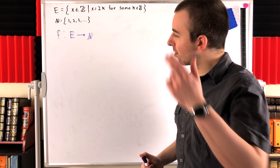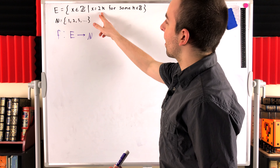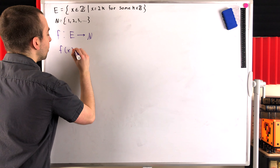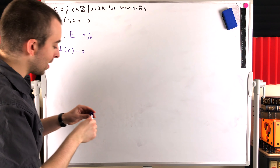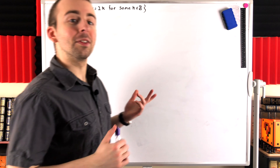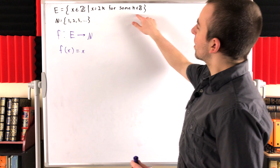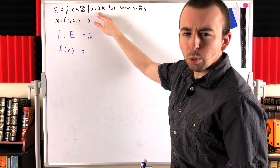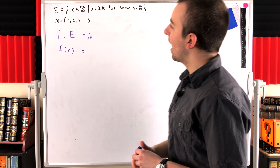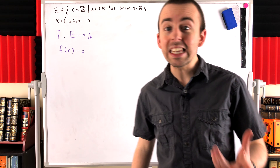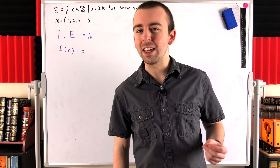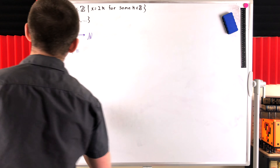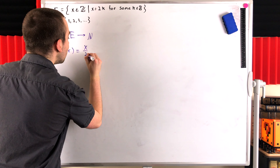So how could we come up with such a function? A quick look at our domain, the even numbers, tells us that certainly the identity function isn't going to work. We can't define f of x equals x — this isn't going to hit all the natural numbers, it's just going to hit a bunch of even numbers. But if we look closer, we see we have all the even numbers defined as 2 times k for some integer k. So if we just took a factor of 2 out of all of our even domain elements, we'd just be left with all of the integers. And so maybe we're on to something.